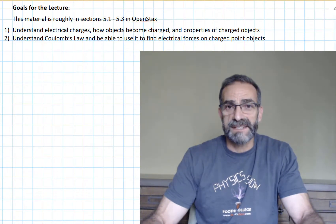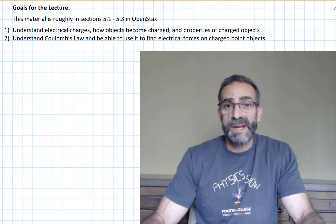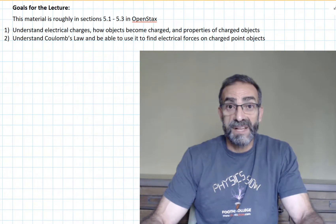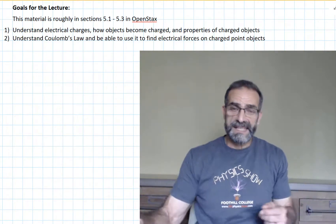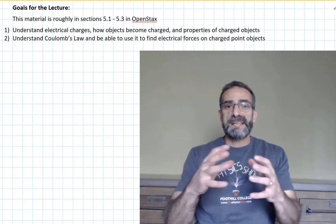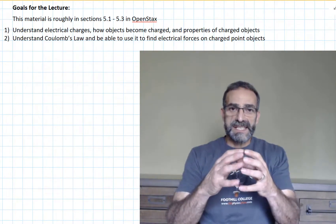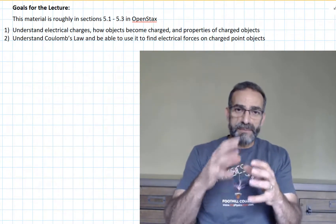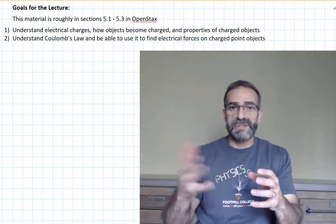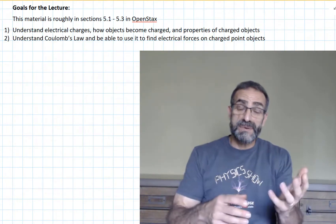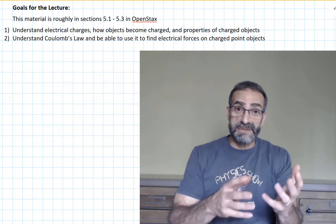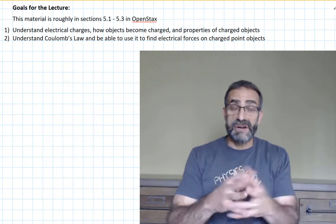Electricity and magnetism — we'll start with electrostatics. Where does electric charge come from? It comes from the atom. Inside every atom is a nucleus, and that nucleus is made up of protons and neutrons. The neutrons are neutral; they don't have any electric charge. The protons are electrically charged — they have a positive charge.